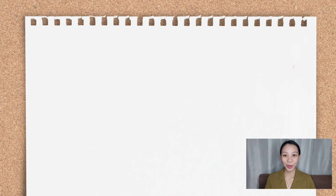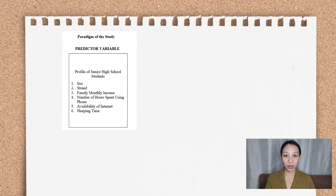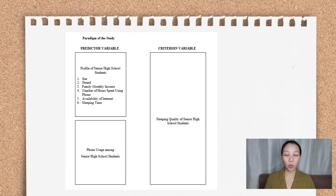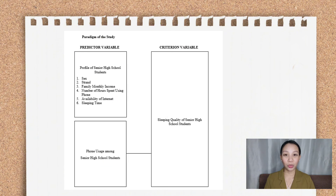Let us start making the paradigm of the study. On the left, you will make one figure which signifies the profile of the respondents, including the sub-variables — replacing 1.1 with 1, 1.2 with 2, and so on. Below that, you will have the phone usage. On the right side, you will place the figure that represents the sleeping quality. Since we are identifying if phone usage has an impact on sleeping quality, we use a line connecting the predictor variable to the criterion variable. Research question 1 corresponds to the profile figure, question 2 to phone usage, question 3 to sleeping quality, and the connecting line signifies research question 4.